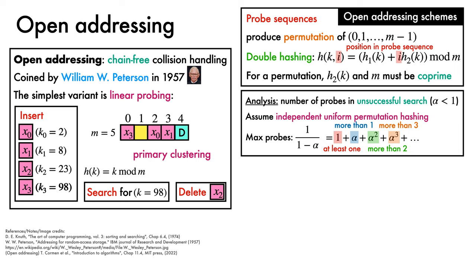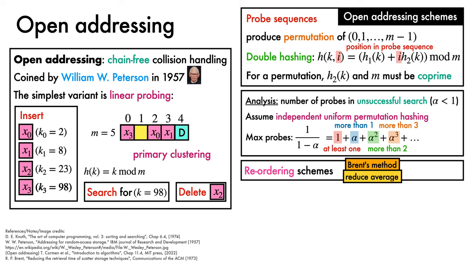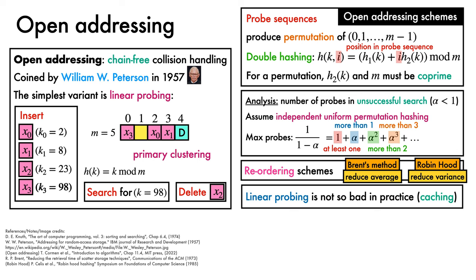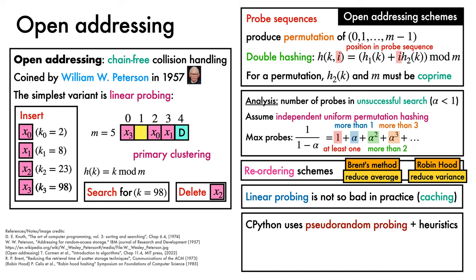In addition to the core open addressing algorithm, various reordering schemes have been considered, that shift objects around in the hash table to improve search behaviour. This idea was originally considered by Peterson in his 1957 paper. Two notable variants of this concept are Brent's method, which rearranges objects to reduce the average search cost for successful searches, and Robin Hood hashing, which tries to reduce the variance of the number of probes associated with searches. It is useful to note that, while linear probing appears somewhat naive thanks to the primary clustering problem, it's often not too bad in practice, because it benefits heavily from caching effects when consecutive probes fall within the cache. Finally, to give an example of a real-world implementation, CPython dictionaries, at least in the current version, which is 3.9, use open addressing with pseudo-random probing in combination with various heuristics to prevent primary clustering.